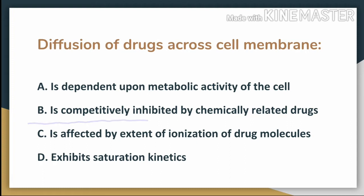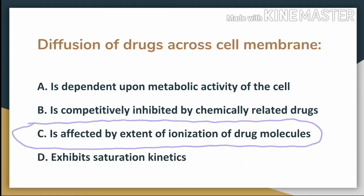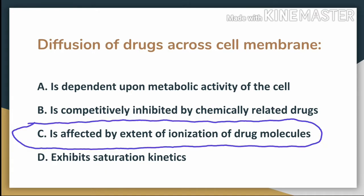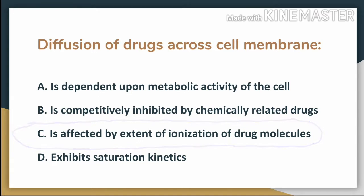The answer of this question is C — that diffusion of drugs across the cell membrane is affected by the extent of ionization of drug molecules. As we know, a drug will be absorbed only when it is present in unionized form, so option C has to be the answer.